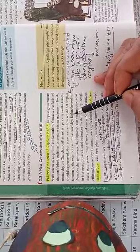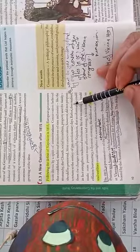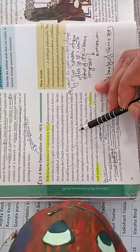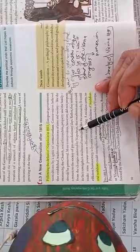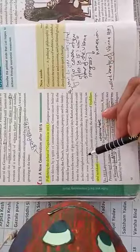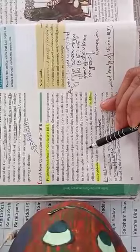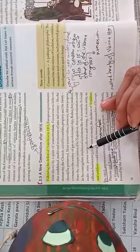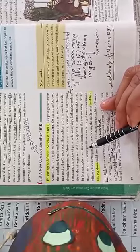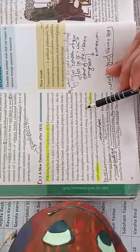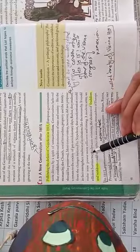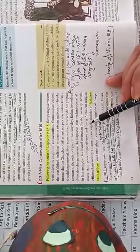Rather, they realized from the changes initiated by Napoleon - Napoleon ki dwara jo bhi badlaav laaye gaye the, un badlaavon se unko yeh ahsas tha - that modernization could in fact strengthen traditional institutions like the monarchy. Ki jo modernization hai, adhunikaran hai, could in fact strengthen, nishchit, taqatwar banayega, majboot banayega traditional institutions ko, jaise ki monarchy.